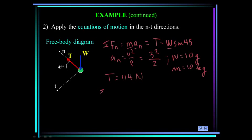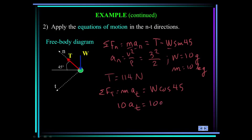Now summing forces in the tangential direction equals mass times tangential acceleration. The only force in the tangential direction is the weight times cos(45°). Making substitutions: 10 times the tangential acceleration equals 10g times cos(45°). The tangential acceleration is 6.94 meters per second squared.